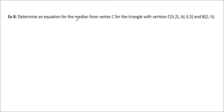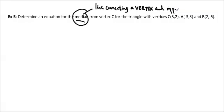Determine an equation for the median from vertex C for the triangle with vertices C(5,2), A(-3,3), and B(2,-5). So the median, in case you don't know, is going to be the line connecting a vertex and the opposite midpoint. So if I have a triangle, they're going to be opposite. It goes through one vertex and one midpoint. I'm starting to write median there. Opposite midpoint.